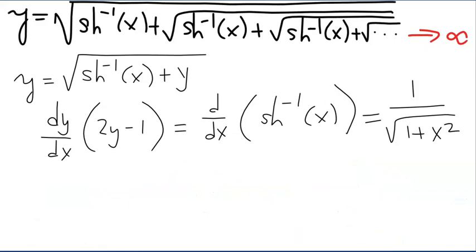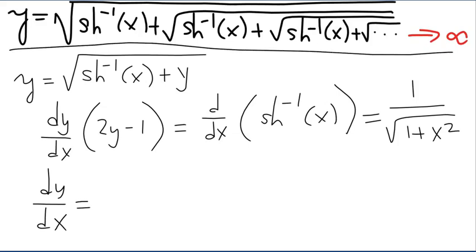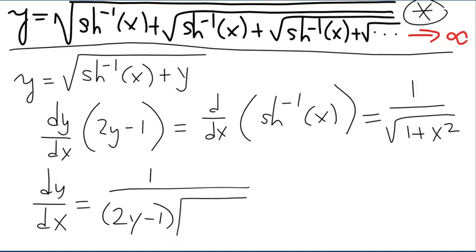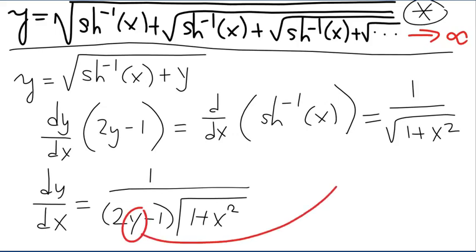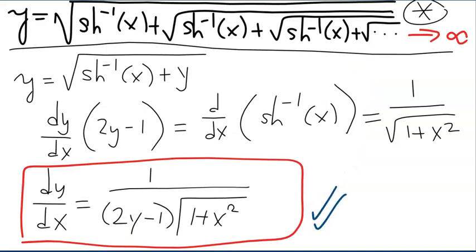Now we have the answer we originally sought. So dy/dx, the derivative with respect to x of that function, is quite simply 1 over (2y minus 1) times the square root of 1 plus x squared, where y is the original function. This is the answer for the derivative of y with respect to x.